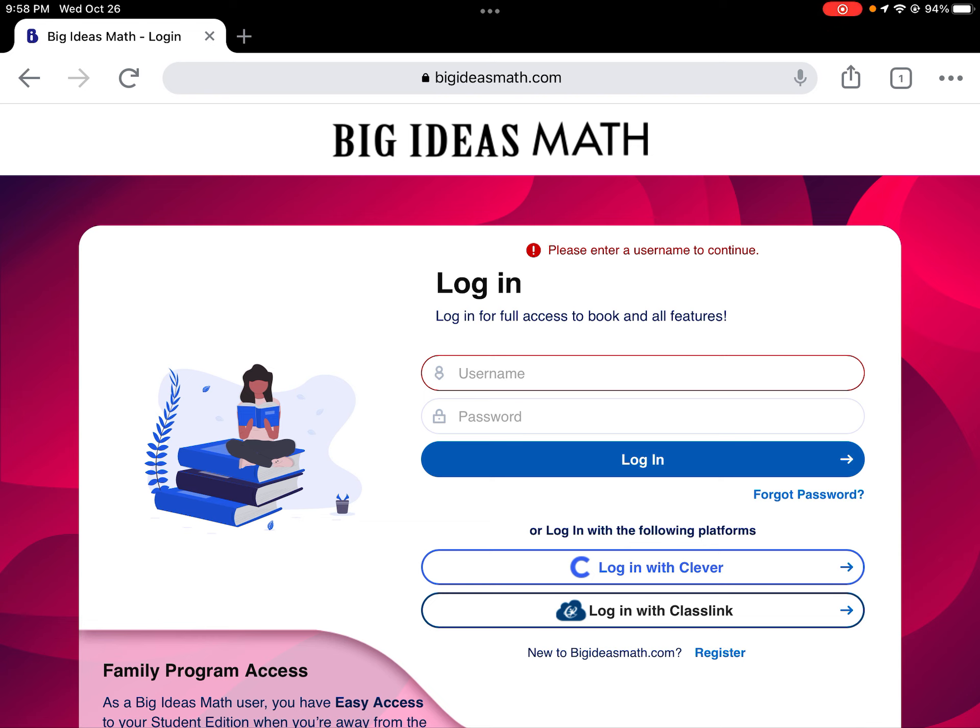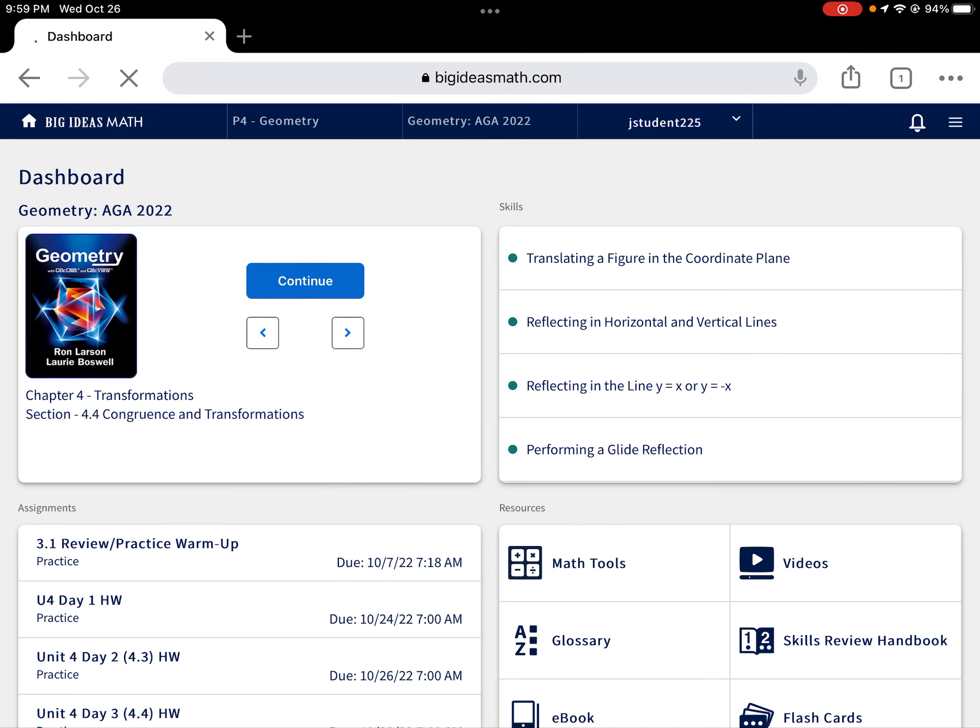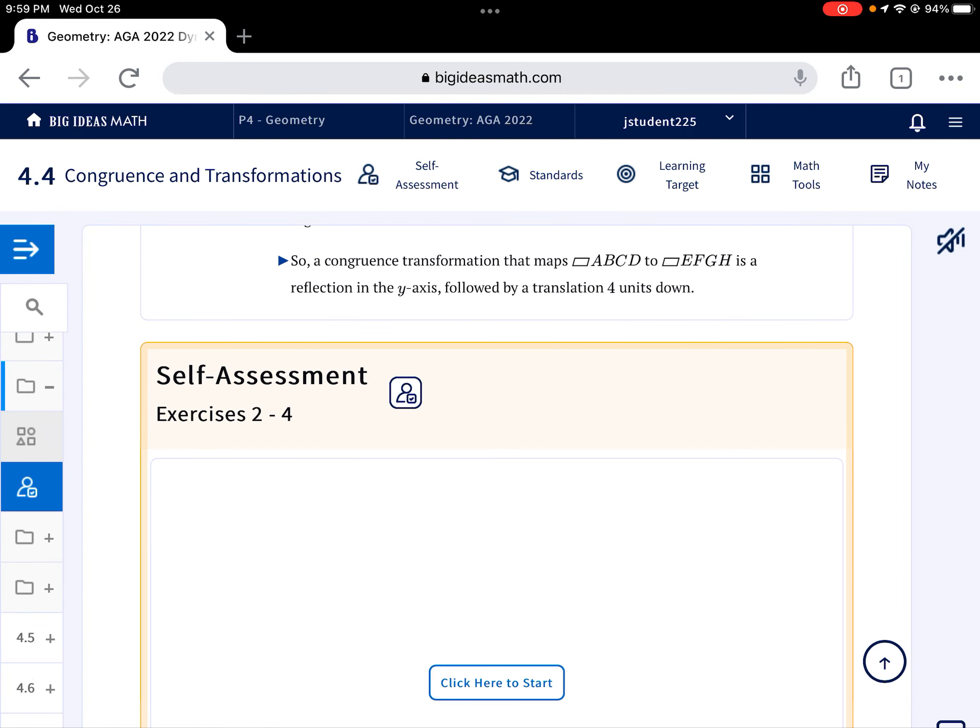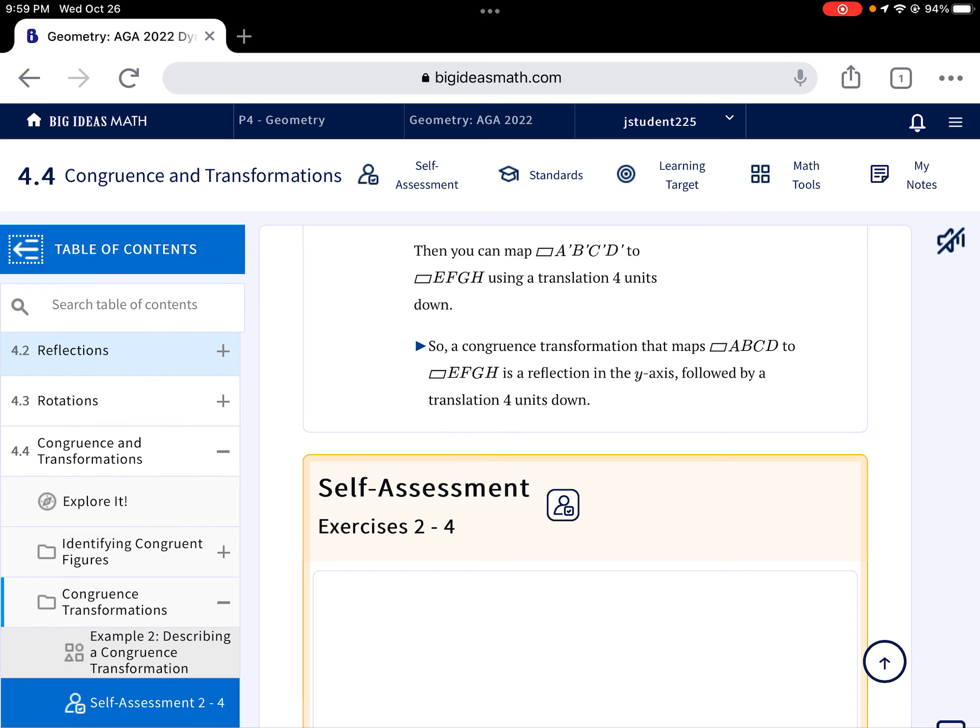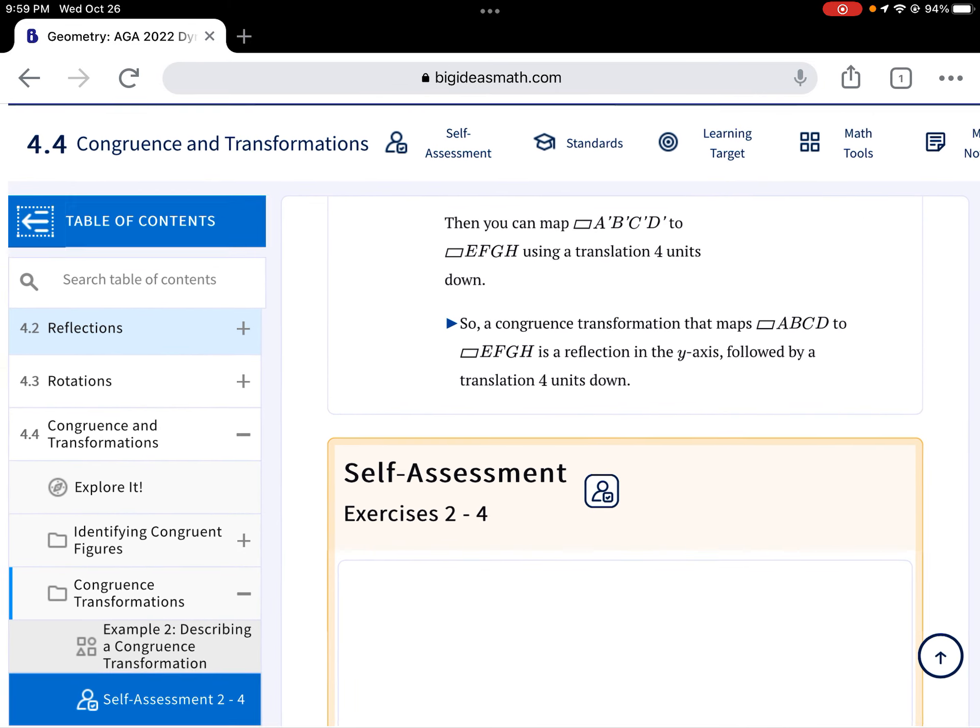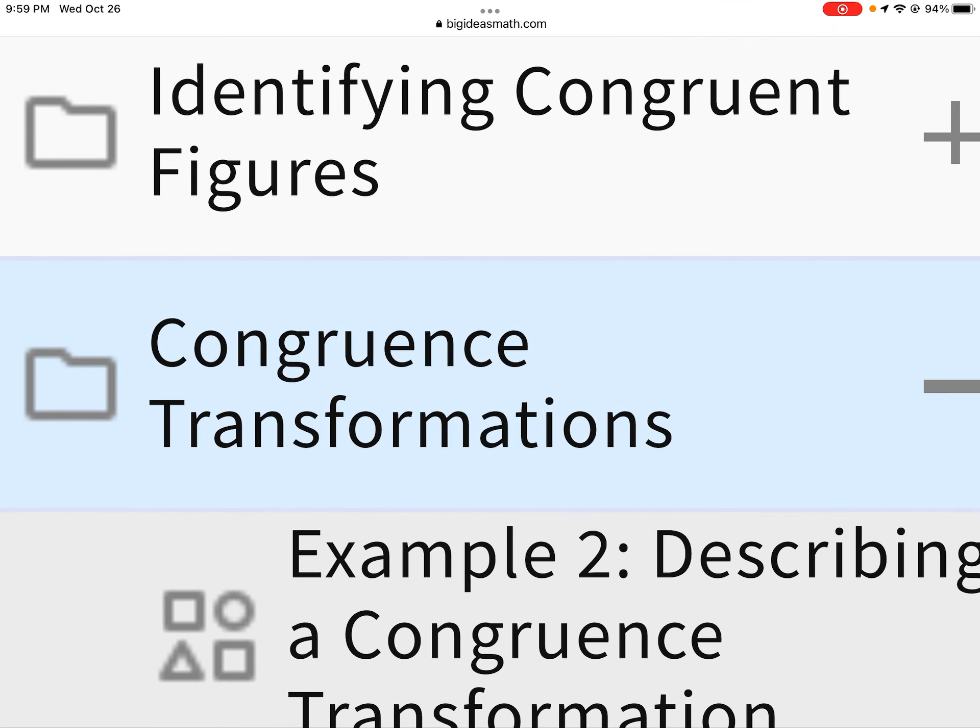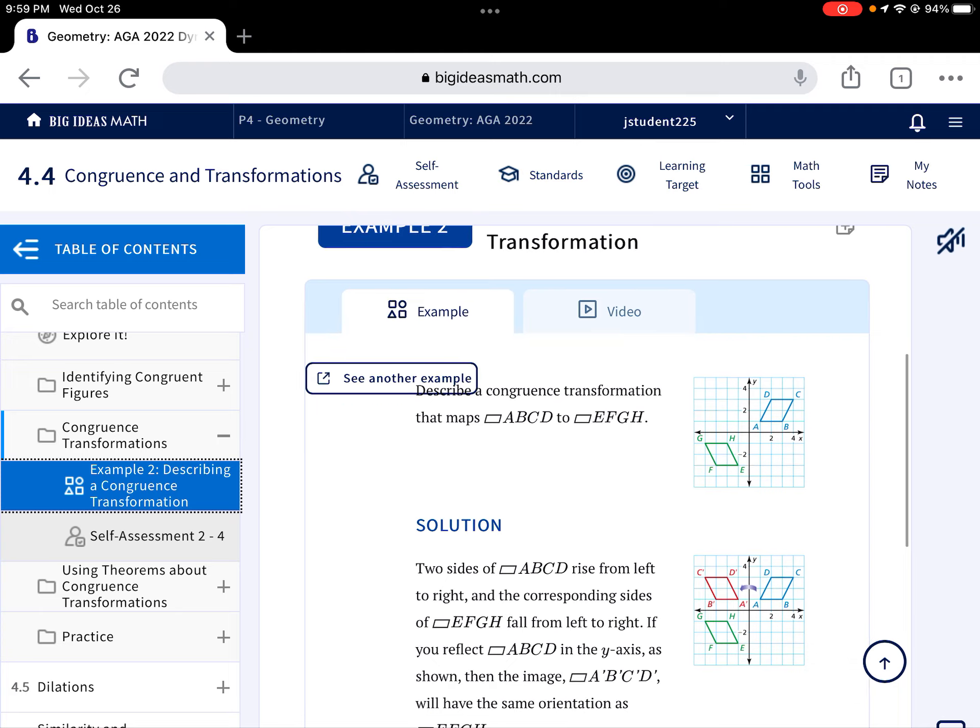When you get logged in, remember, we go to our Dynamic Student Edition by clicking the blue Continue button here. And then, we're going to open up our Table of Contents to make sure we're in Lesson 4.4 here, Congruence and Transformations. And the last example we did was a Congruence Transformation example. So, I'm here in this folder here. Congruence Transformations. And we did Example 2. That's the example we just did.